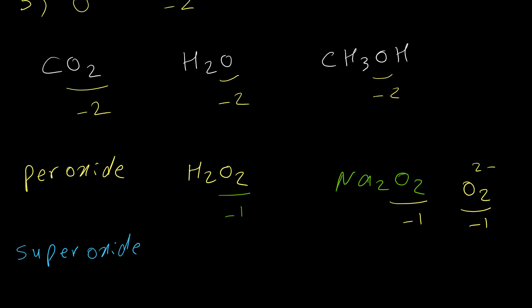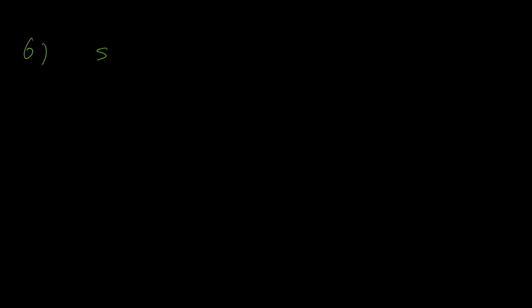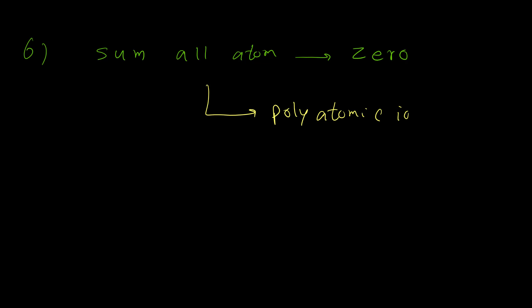There is also another type of oxygen compound called superoxide. There aren't many examples, but we have potassium superoxide. The oxidation number for oxygen in superoxide is -1, and it is O2^-1. Superoxide and peroxide are exceptions and we don't normally see them in compounds. Rule number 6 is very important — it says the sum of oxidation numbers of all atoms in a neutral compound is equal to 0, and the sum for a polyatomic ion is equal to the charge of that ion.